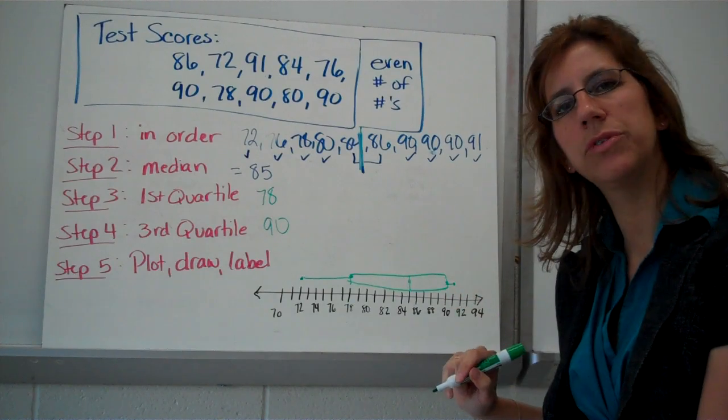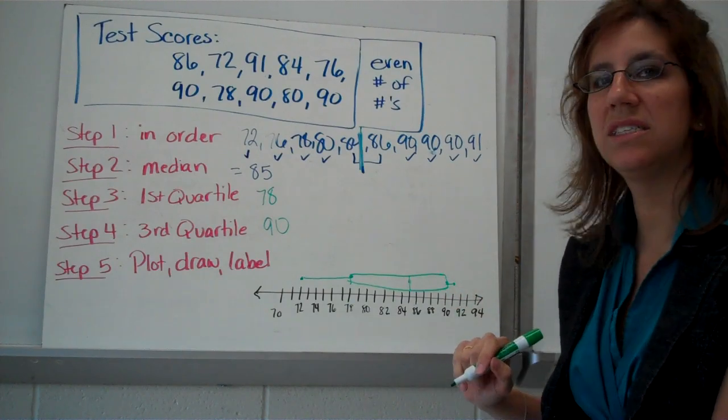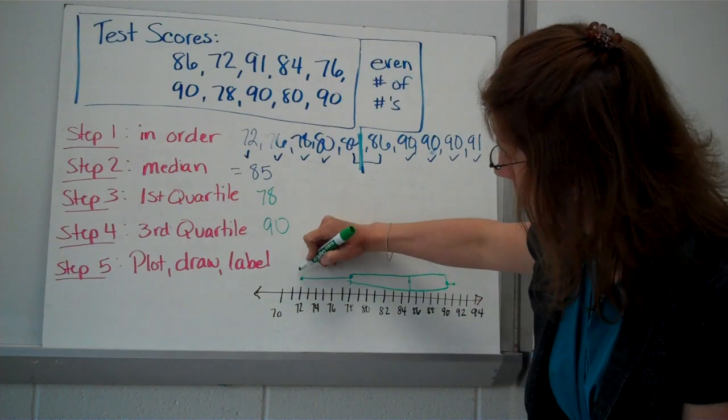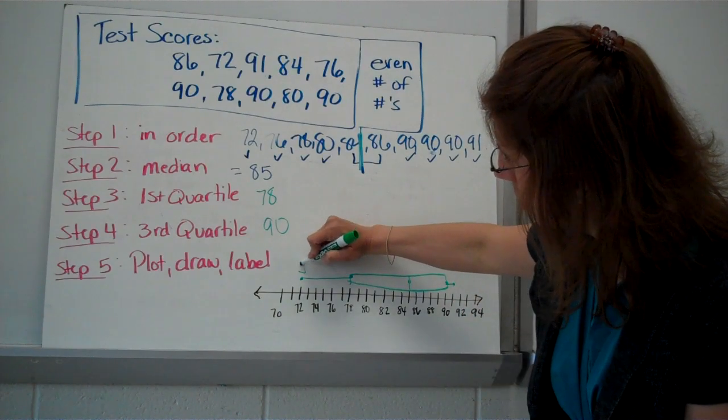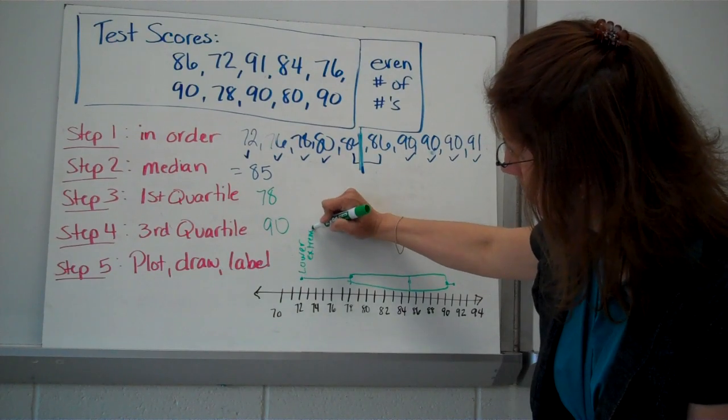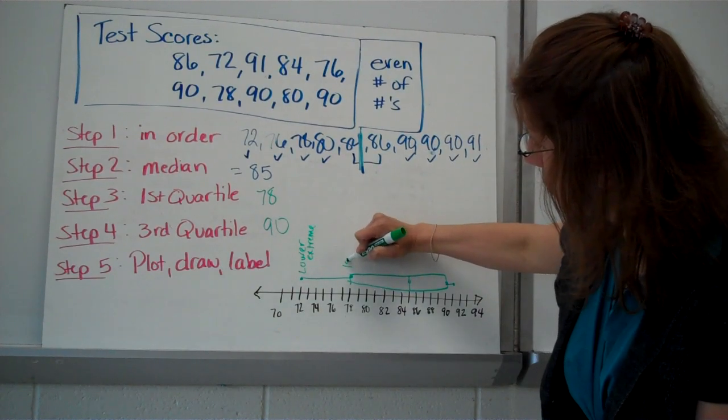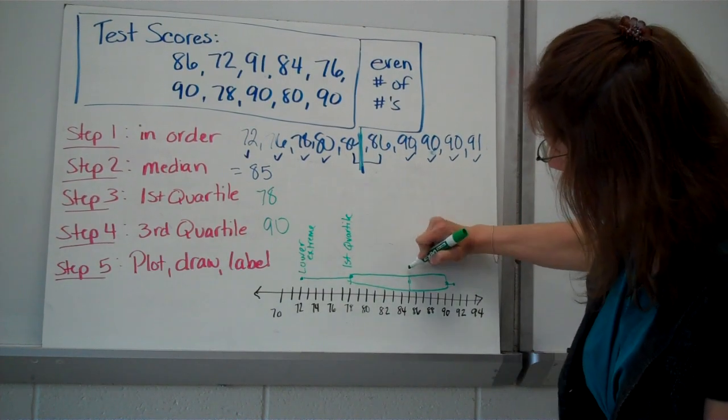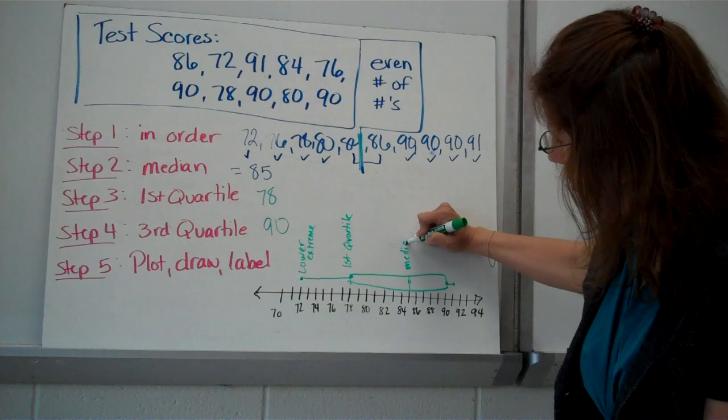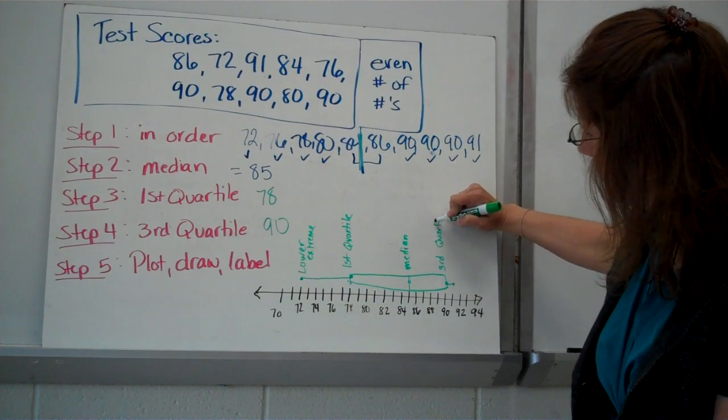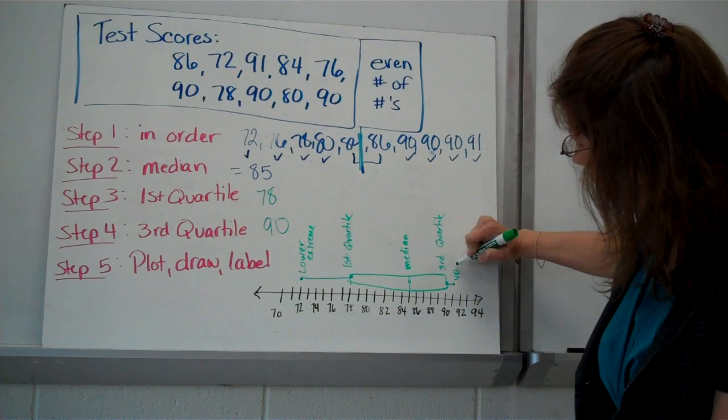Okay. And now we have our lower extreme of 72, and our upper extreme of 91. Notice how short that whisker is. That's one of the disadvantages of a box and whisker plot. Now, we've got, this is a lower extreme, our first quartile, our median, our third quartile, and our upper extreme.